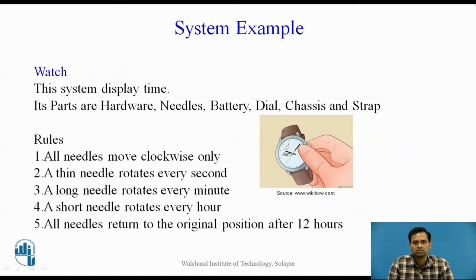An example of a system is a watch. The watch displays time and its hardware parts include three needles, a battery, dials, chassis, and straps. This system works on rules: all needles move clockwise only; the thin needle rotates every second; the long needle rotates every minute; and the short needle rotates every hour.